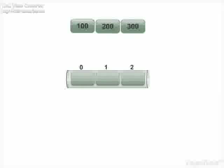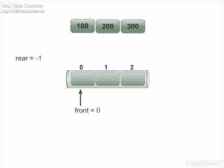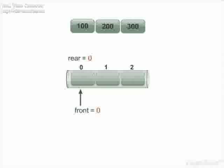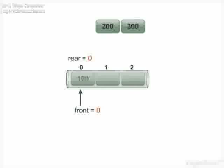Now let us see an example. To create a queue of these elements, we take an array of size 3. Initially, front is set to 0 and rear is set to minus 1. Suppose we want to add number 100 — then rear is incremented by 1 and becomes 0, so number 100 is added at the start of the queue.